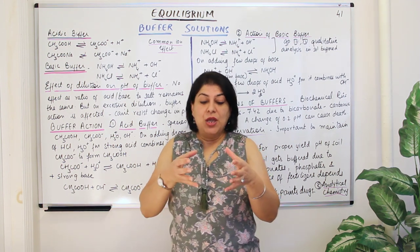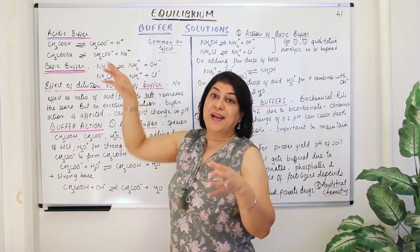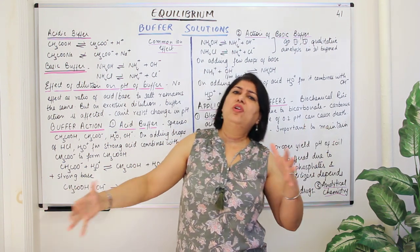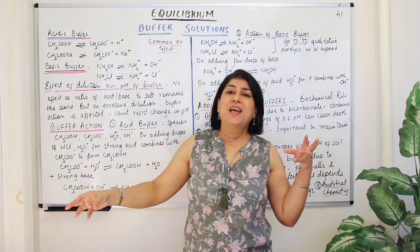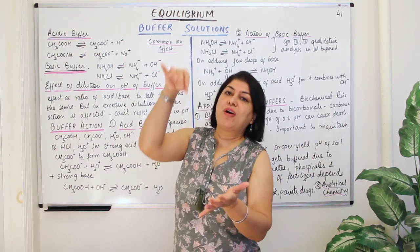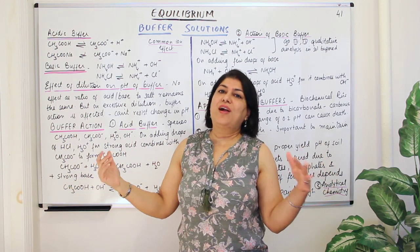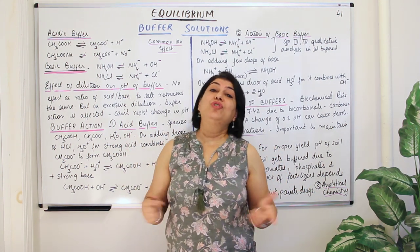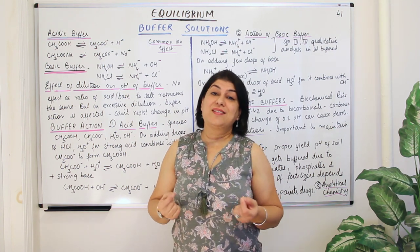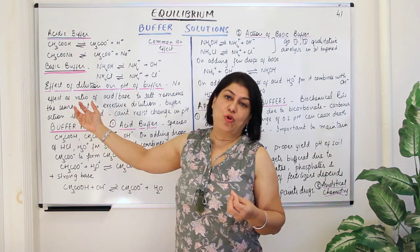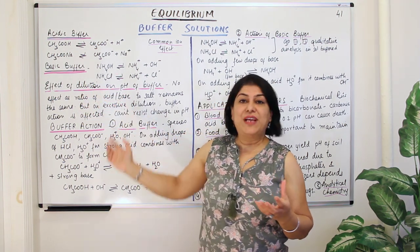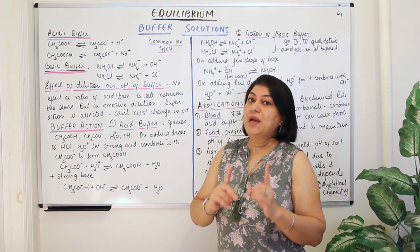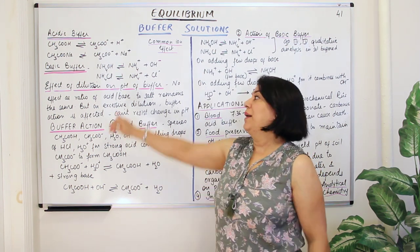How does dilution affect the buffering action? The common ion is present at a certain concentration and is able to hinder reactions at that level. But when you add a lot of water, the molecules are far apart. If you then add a few drops of strong acid or base, the molecules cannot quickly come together to oppose the process. Therefore, the pH of an excessively diluted buffer would change on addition of acid or base.